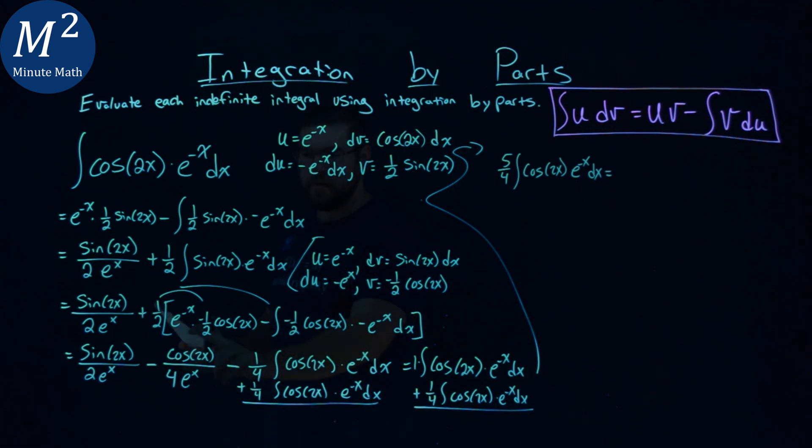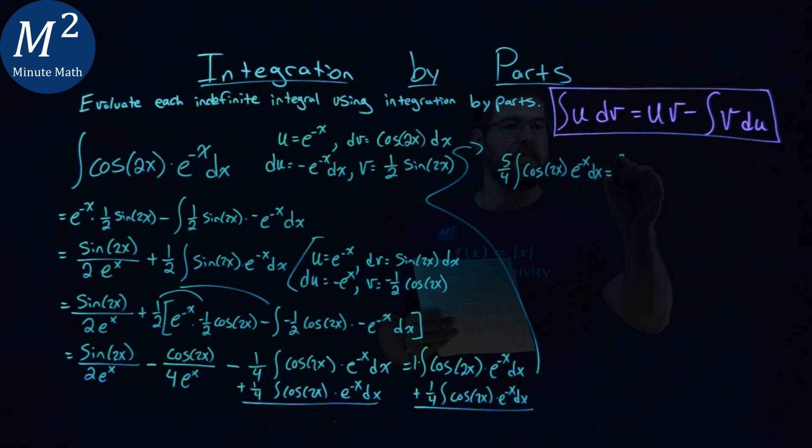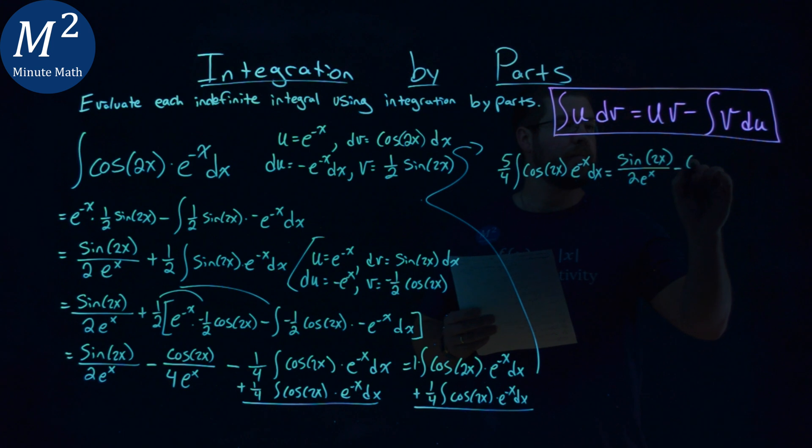And that is equal to this whole part right here, that's sine of 2x over 2 e to the x power, minus cosine of 2x over 4 e to the x power.